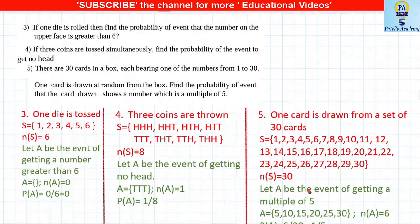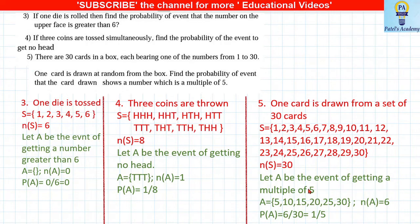One die is rolled; total outcomes are {1, 2, 3, 4, 5, 6}. Find the probability of getting a number greater than 6. Let A be that event — there is no number greater than 6, so A = {} (empty set), nA = 0. P(A) = 0/6 = 0.